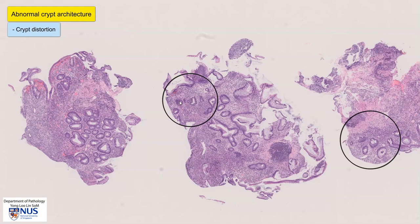There are some atrophic small crypts here. They are spaced wider apart than usual. Over here, there is a suggestion of branching of the crypts.